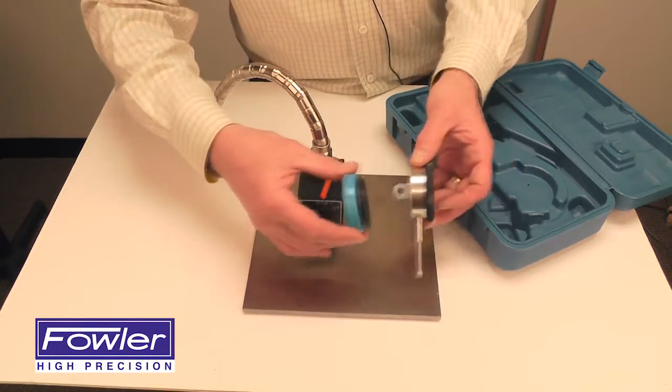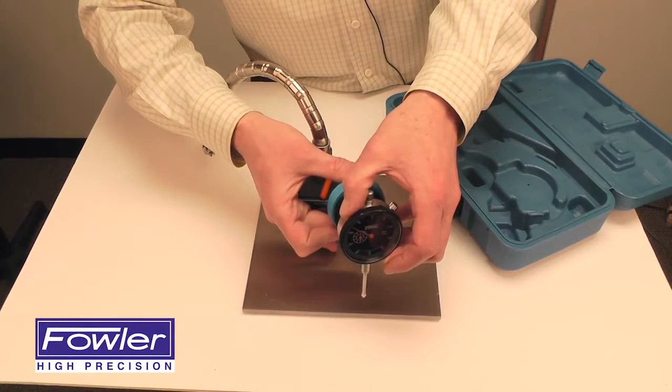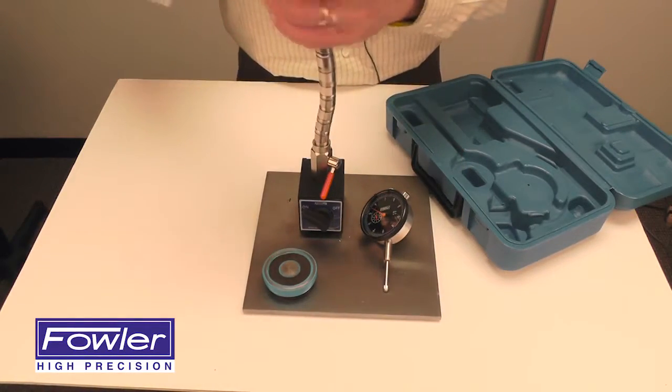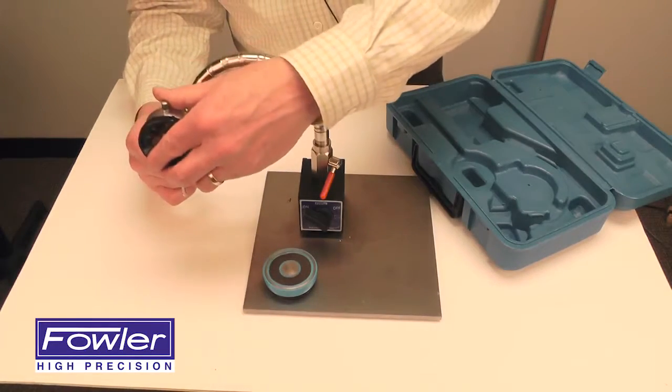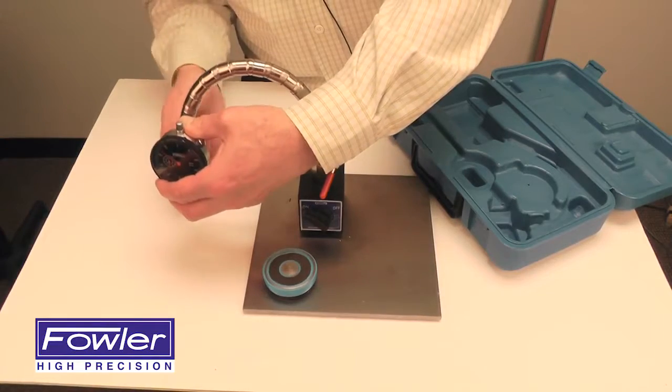The flex arm is adjustable in virtually any position. Simply mount the indicator in the holder located at the end, adjust the tension where you'd like it, and activate the cam to hold it in position.